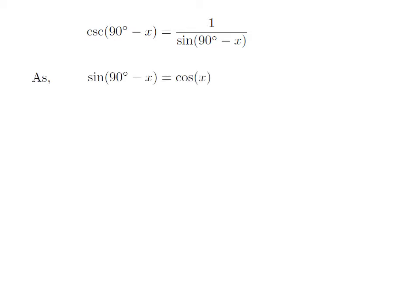As we know, the trigonometry identity sine of 90 degrees minus x is equal to cosine of x. The proof of this trigonometry identity has been explained in the video appearing in the upper right corner. The URL of the video has also been mentioned in the description section.